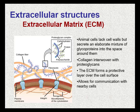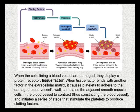Blood clotting is an example of how the extracellular matrix's role in cell communication works. When the cells lining a blood vessel are damaged, they display a protein receptor called tissue factor. When tissue factor binds with another factor in the extracellular matrix, it causes platelets to adhere to the damaged blood vessel's wall, which stimulates the adjacent smooth muscle cells to contract, constricting blood vessel flow and initiating a series of steps that stimulate the platelets to produce clotting factors.